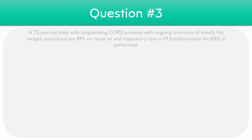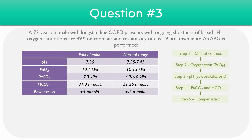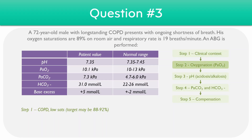Moving on to the third question, here we have a 72-year-old male with long-standing COPD who presents with ongoing shortness of breath. His oxygen saturations are 89% on room air, and his respiratory rate is 19 breaths per minute. For step one, the patient has long-standing COPD and slightly low saturations on room air, though it's worth noting that given the patient's COPD, their saturations might actually be within the normal range for them — however, we do have to confirm this before making that assumption. For step two, the PaO2 is 10.1, which is just above the normal range.